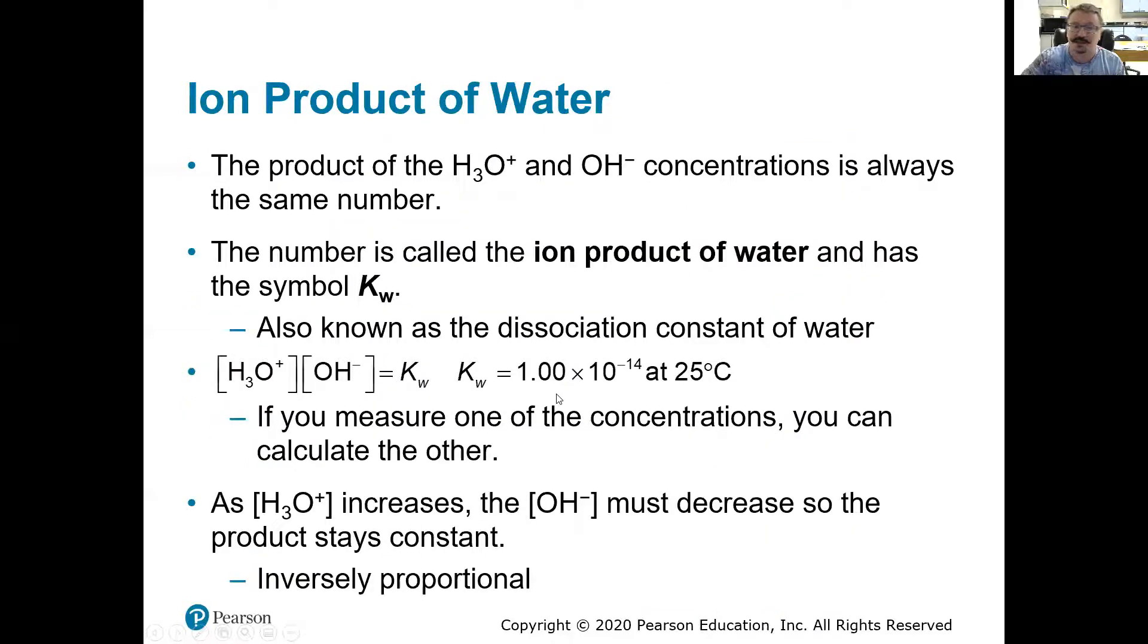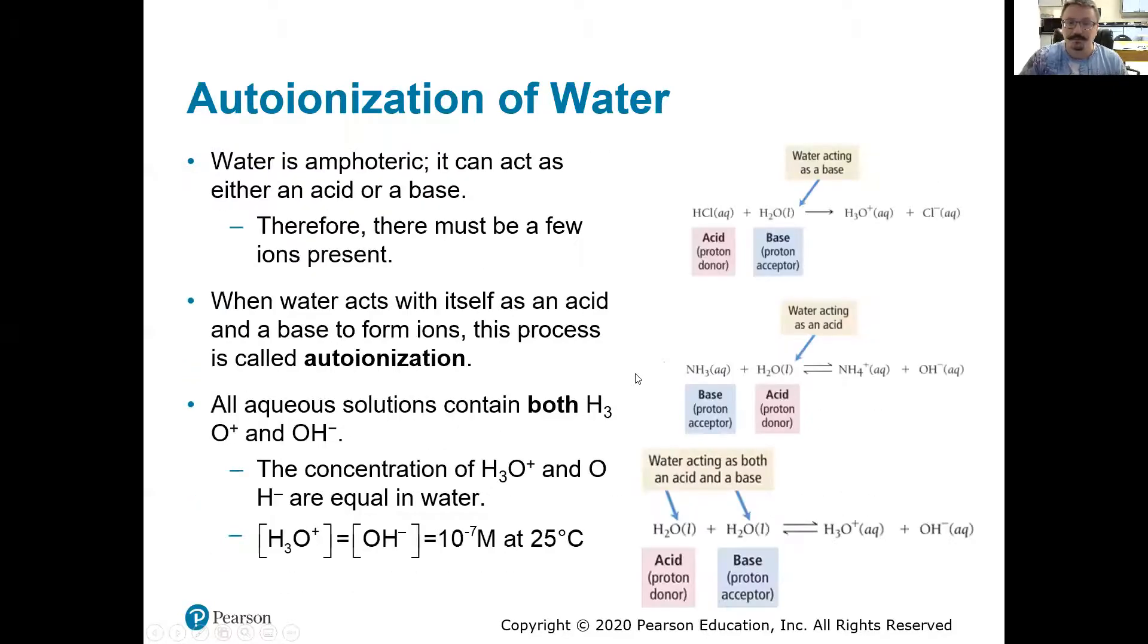And what we're going to see for the auto ionization constant of water is it is equal to 1 times 10 to the negative 14. And it's going to be equal to those two potential ions. So again, really just equilibrium constant, subscript W. So in this case, it's the equilibrium constant for water. The two products are the H3O plus and the OH minus equaling that. And of course, if they have to equal 1 times 10 to the negative 14, each one would be at a concentration of 1 times 10 to the negative 7.